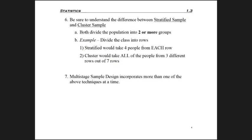Another method using those five approaches is called multi-stage sampling, which incorporates more than one sampling design within itself. For example, in the stratified sample above where I took four people from each row, if I took the first four people in each row, that's a convenient sample. Alternatively, I could randomly select those four people. So there are different ways to see the methods combined.